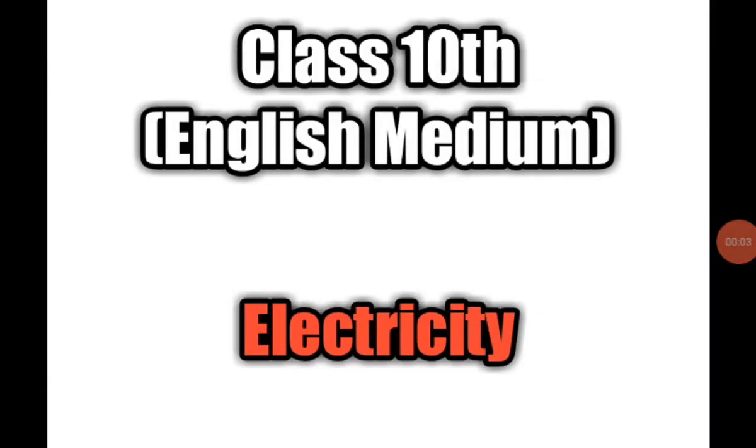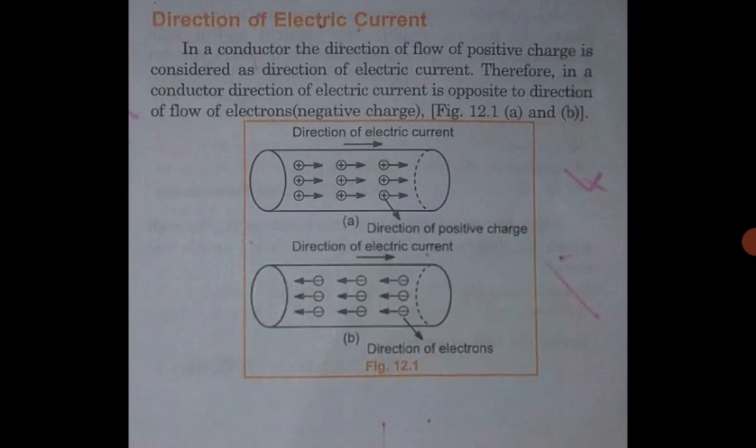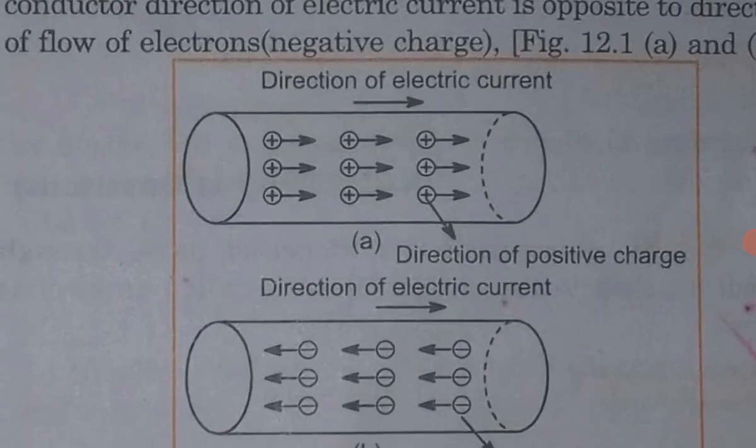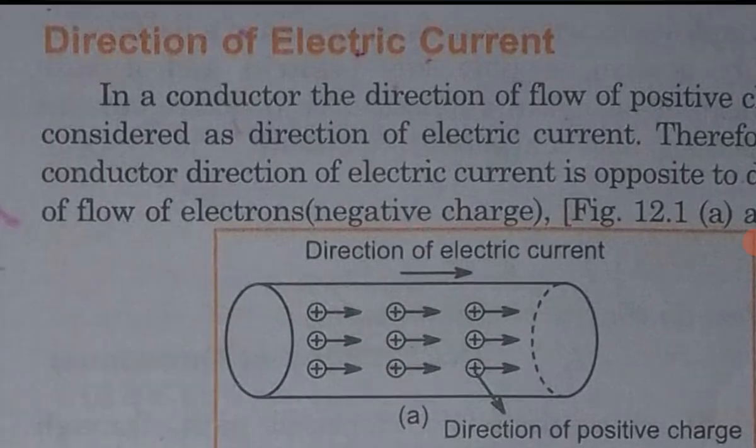Good morning. Today we will continue the chapter Electricity, and today's topic is Direction of Electric Current. As you know, electric charges are of two types: negative and positive. By convention, the direction of electric current is taken as the direction of flow of positive charge.